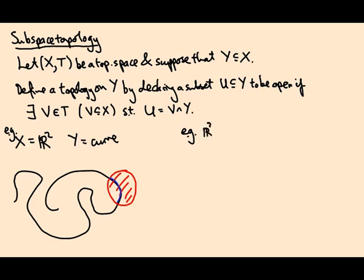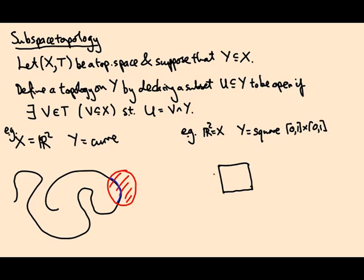Let's do another example, which is a bit more counterintuitive. Again take R2 as X, but Y is going to be the square [0,1] × [0,1] sitting inside the plane. That's a closed square — I've used closed intervals to define it. But I claim that in the subspace topology on Y, that square is an open set. It has to be, since the whole space must be open. The reason is I can take an open disk whose intersection with Y is the whole square.